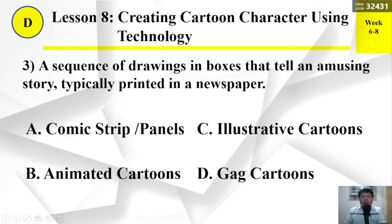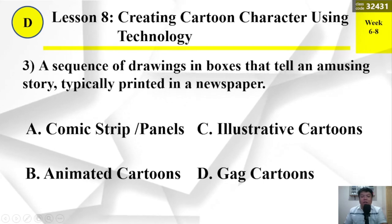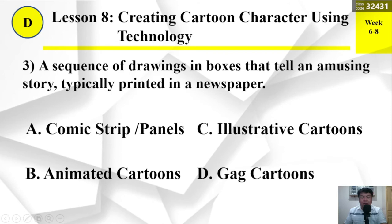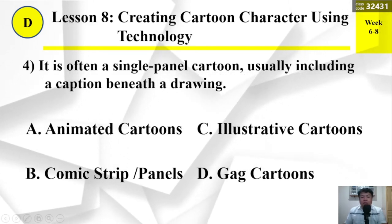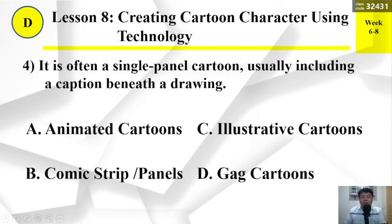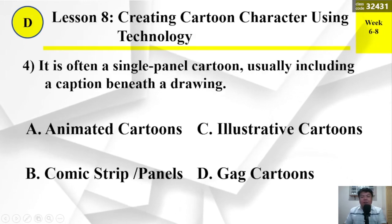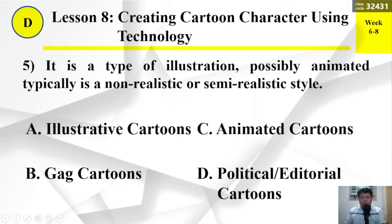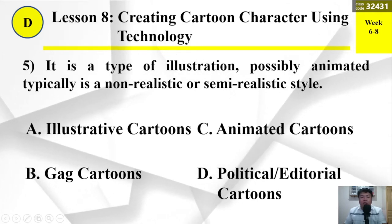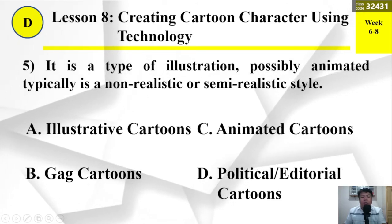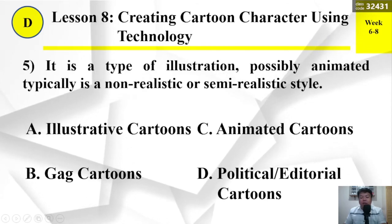Number 3: A sequence of drawings in boxes that tell an amusing story, typically printed in a newspaper — (a) comic strip panels, (b) animated cartoons, (c) illustrative cartoons, or (d) gag cartoons. Number 4: It is often a single-panel cartoon, usually including a caption beneath a drawing — (a) animated cartoons, (b) comic strip panels, (c) illustrative cartoons, or (d) gag cartoons. Number 5: It is a type of illustration, possibly animated, typically in a non-realistic or semi-realistic style — (a) illustrative cartoons, (b) gag cartoons, (c) animated cartoons, or (d) political/editorial cartoons.